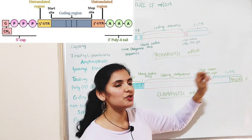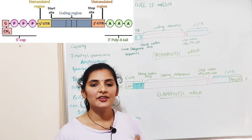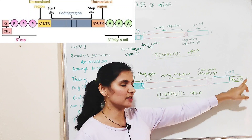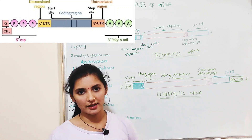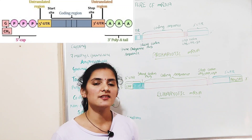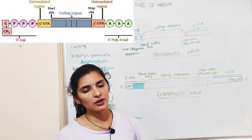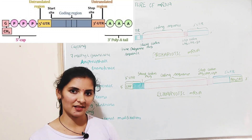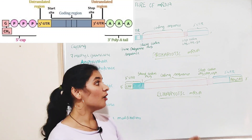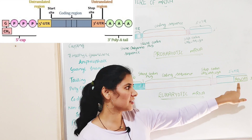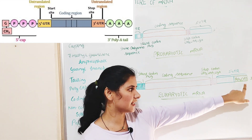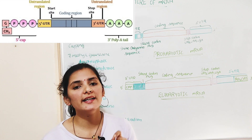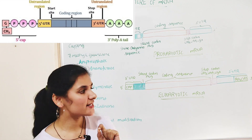Following the coding sequence is the 3' UTR region. The 3' UTR means untranslated region, which is present toward the 3' end. This untranslated region is a sequence of nucleotides that will not be translated during translation or protein synthesis.